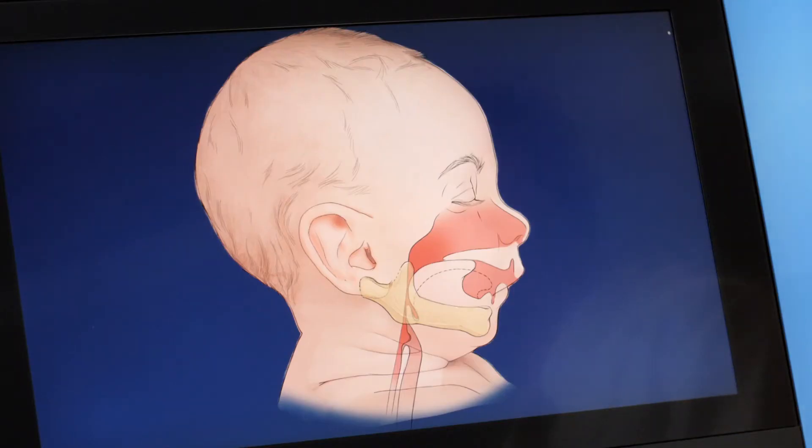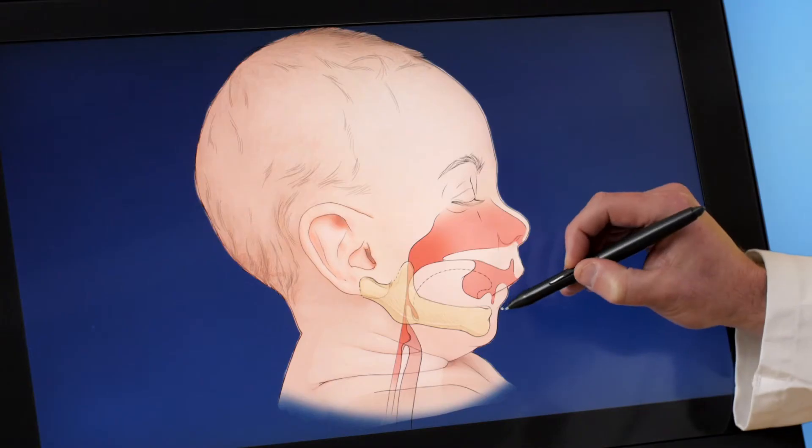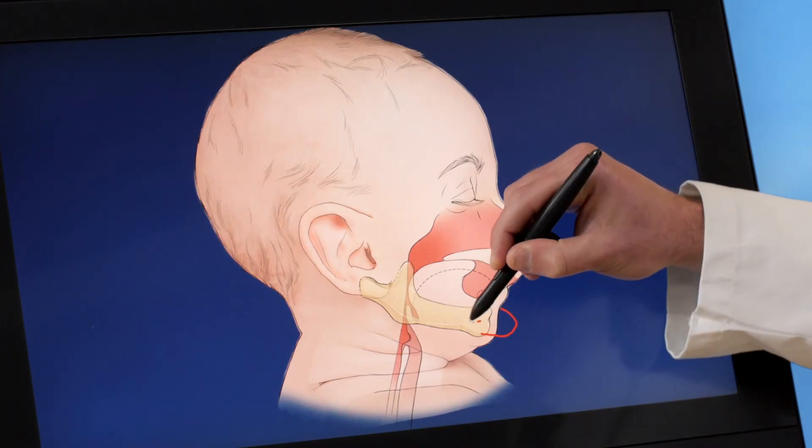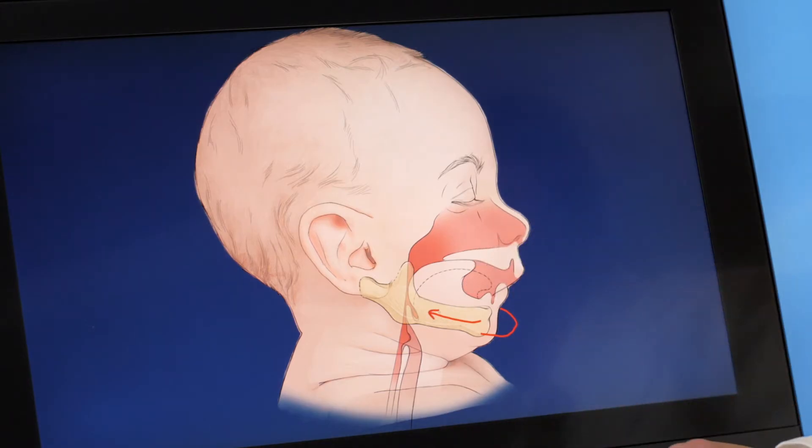In a baby with Robins Sequence, however, the lower jaw does not come as far forward as it typically would. Instead, the lower jaw is set backwards and this is called micrognathia. Micrognathia is the first or initiating feature of Robins Sequence.